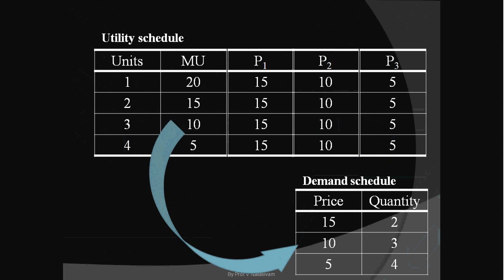This demand schedule is derived based on the information we get from the utility schedule. Look at the demand schedule: at a higher price the consumer buys less, at a lower price the consumer buys more. This is in accordance with the law of demand. Thus the law of demand is based on the law of diminishing marginal utility, which becomes one of the reasons for the demand curve to slope downwards from left to right.